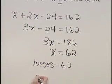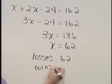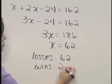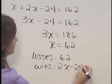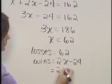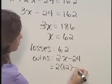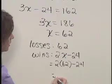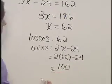And the number of games won, or the number of wins then, is 2X minus 24. That's 2 times 62 minus 24, or that is 100.